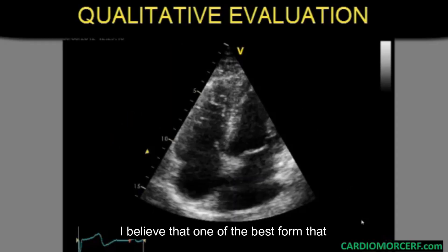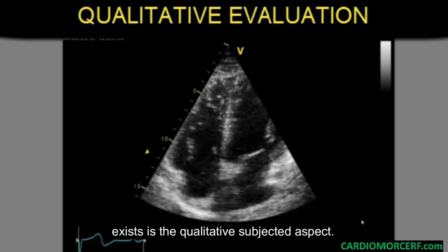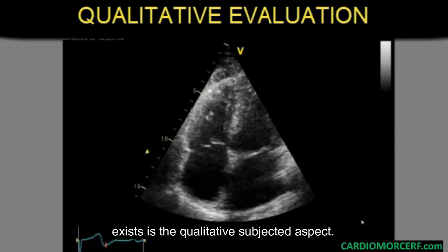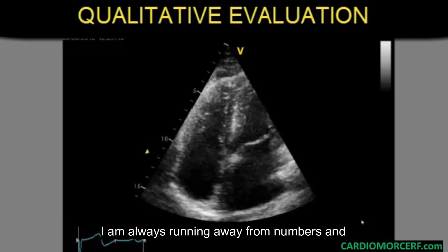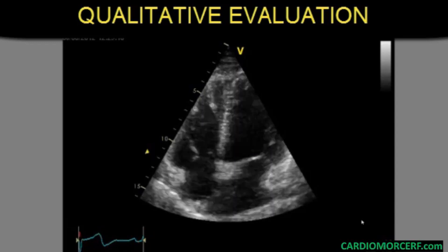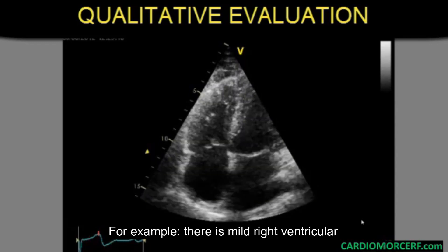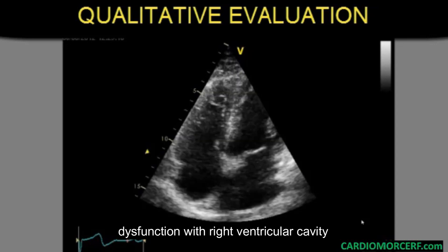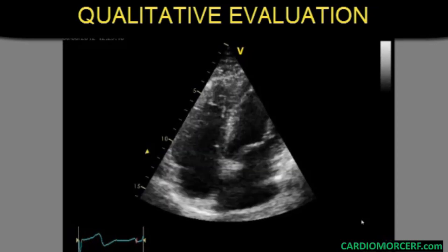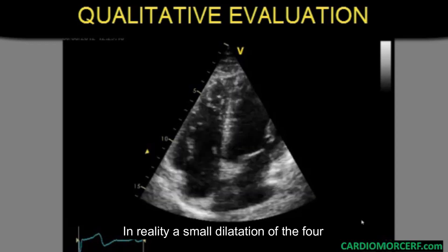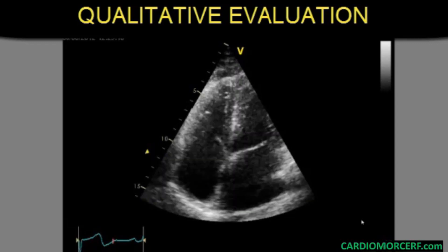I believe that one of the best forms that exists is the qualitative, subjective aspect. I am always running away from numbers and equations. For example, there is mild right ventricular dysfunction with right ventricular cavity increase — in reality, a small dilatation of all four cavities.